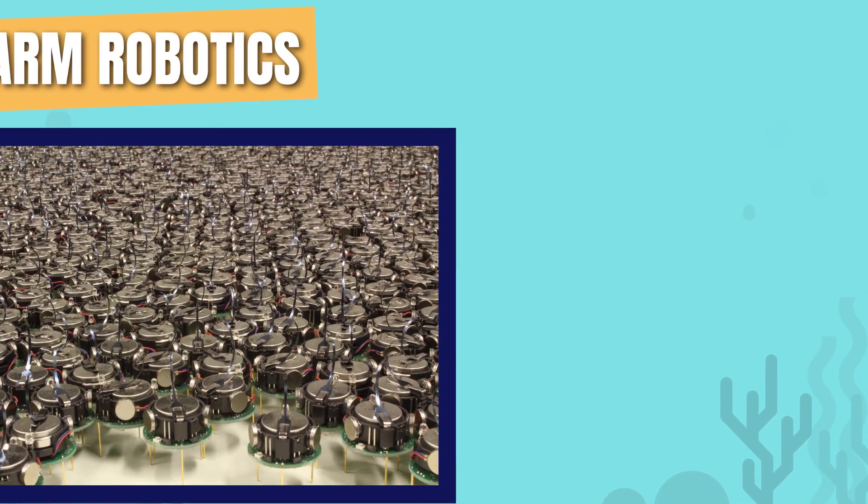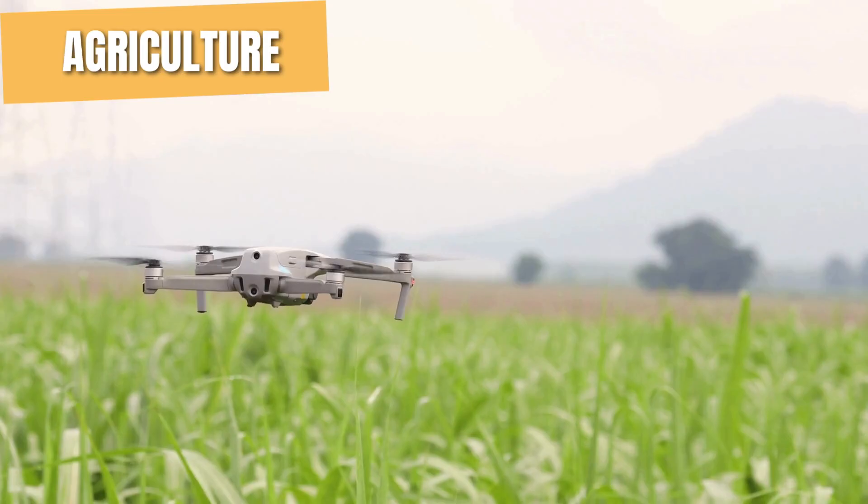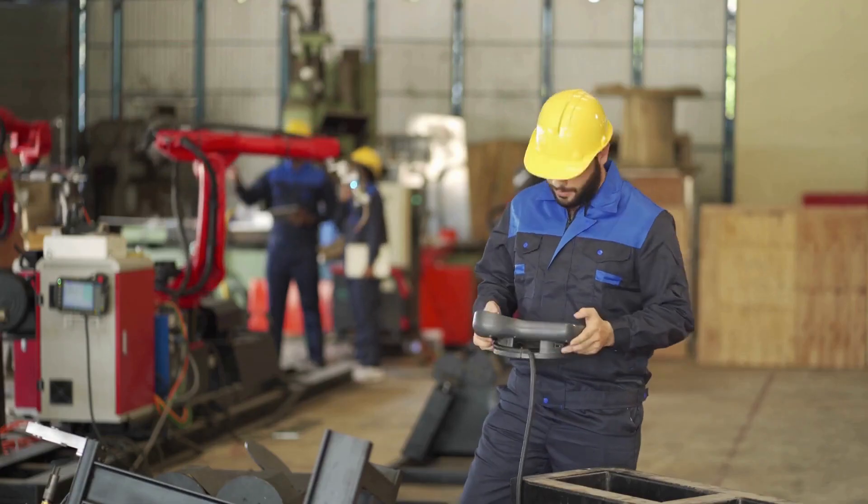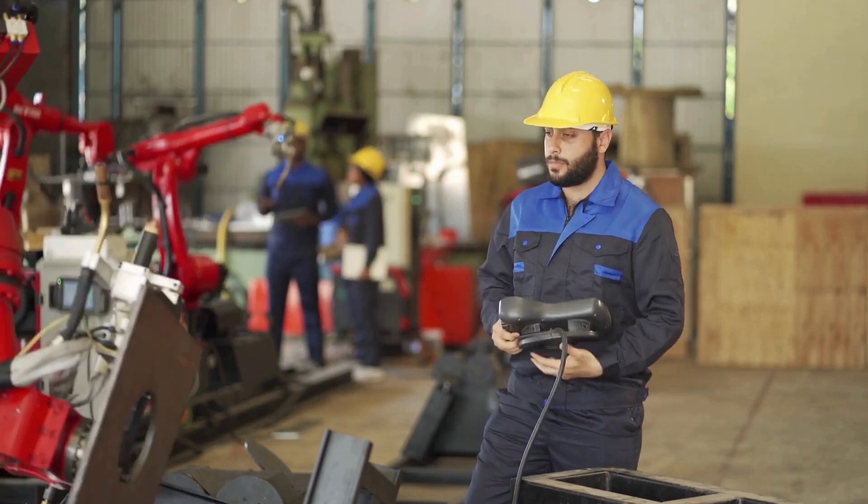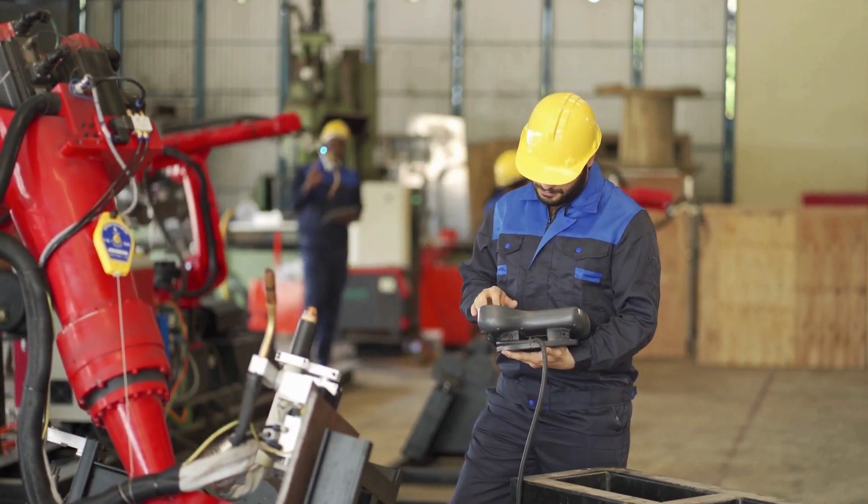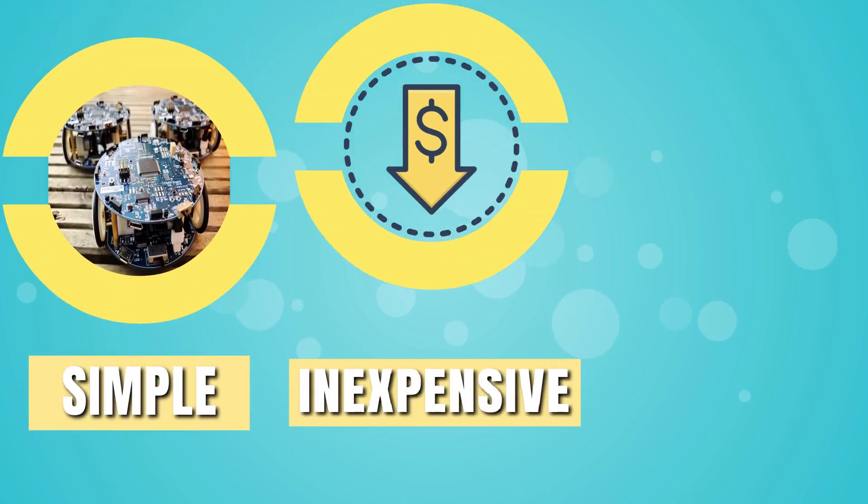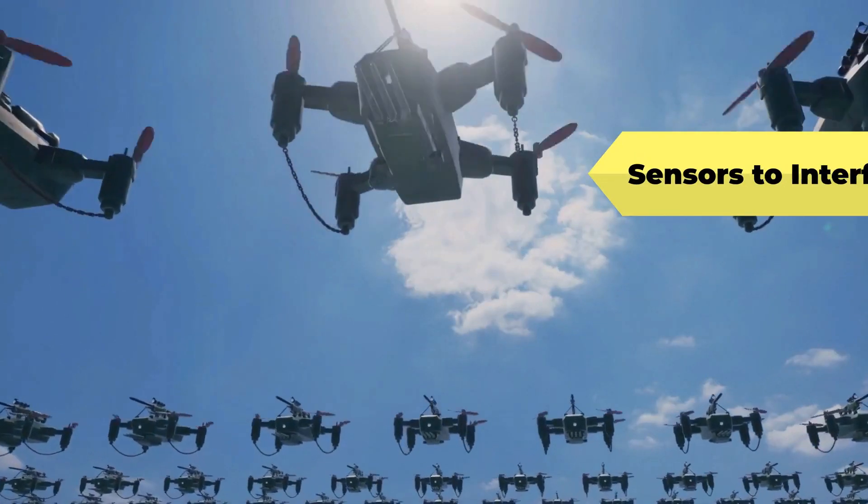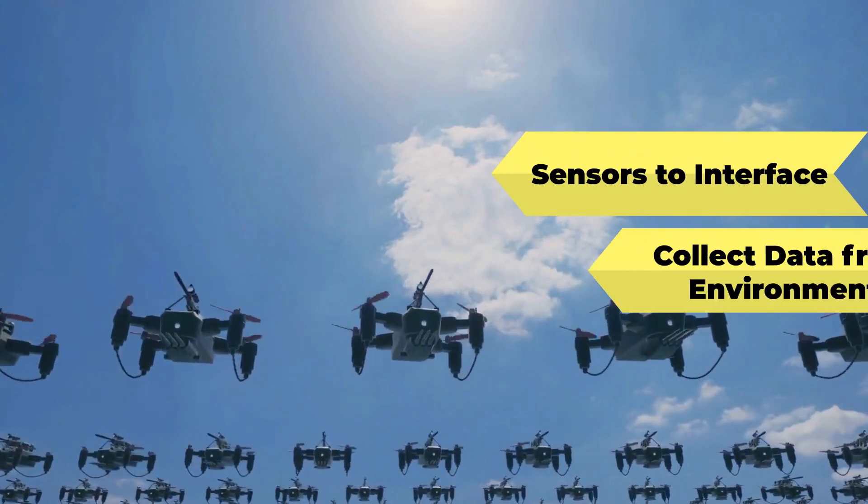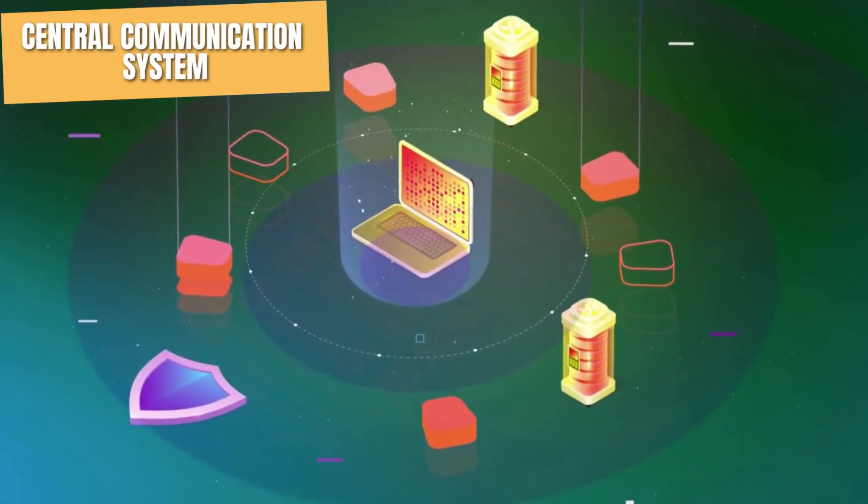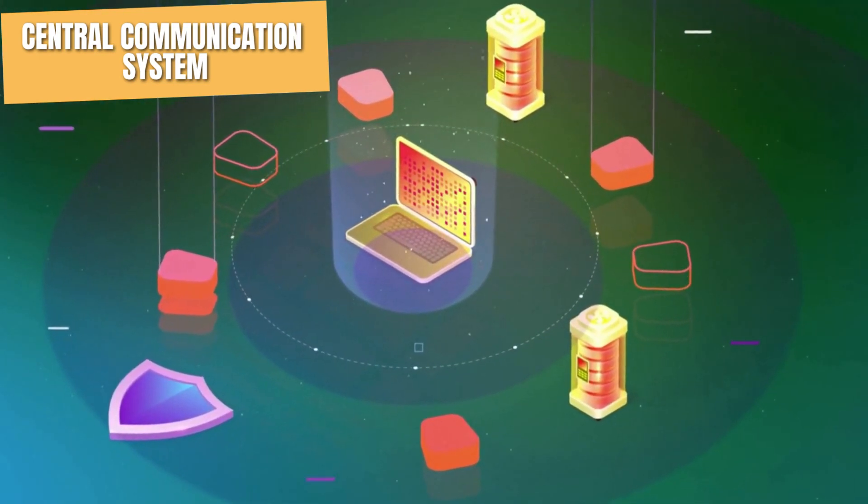Swarm robotics holds a potential to transform industries like agriculture, search and rescue missions, and even military applications. Engineers are studying how groups of simple robots can work together to perform complex tasks, mimicking the behaviors of social insects like bees, ants, and termites. Each robot in a swarm is designed to be simple, inexpensive, and easy to produce in large quantities. This is crucial since each unit requires sensors to interface and collect data from its environment. A central communication system allows the robots to coordinate their actions and work together toward a common goal.